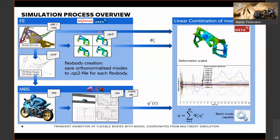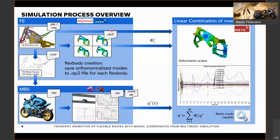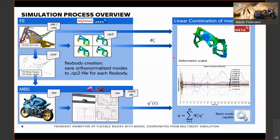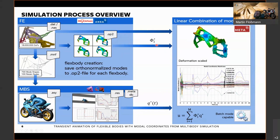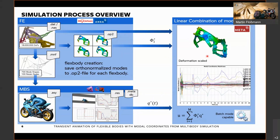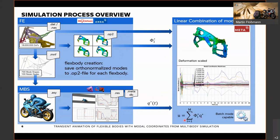The mode shapes can also be saved during MNF creation in an OP2 database — a normal Nastran output database where we store all the mode shapes. If we combine these two worlds, we can get the full deformation of the body. We have the mode shapes, the modal coordinates, and the method. Using the linear combination, we get what you can see in the animation: the transient behavior of the flexible body. This is the same as the modal superposition I described before.